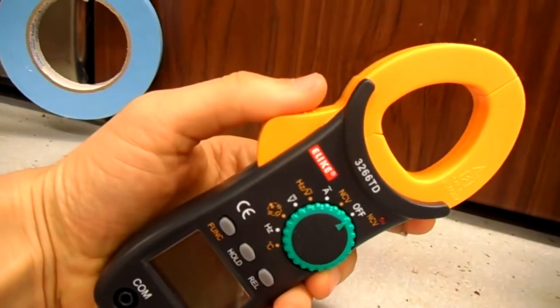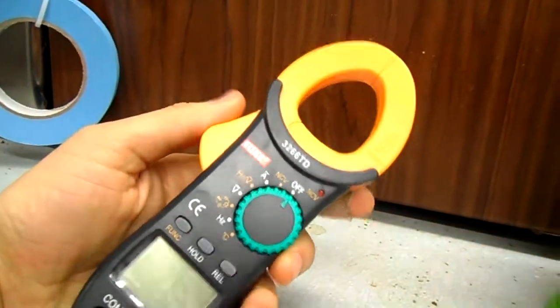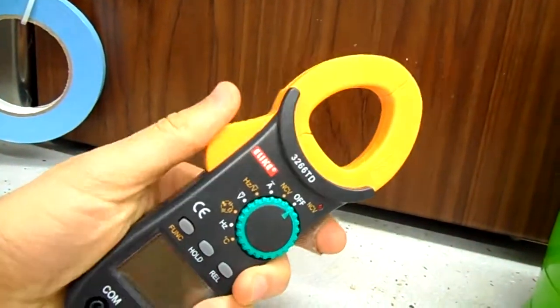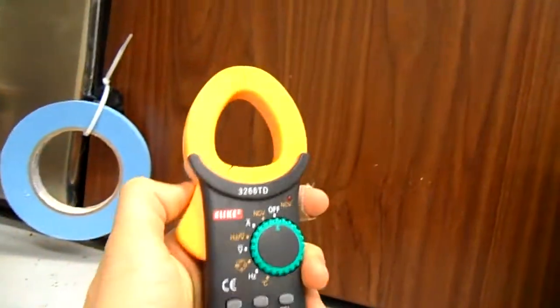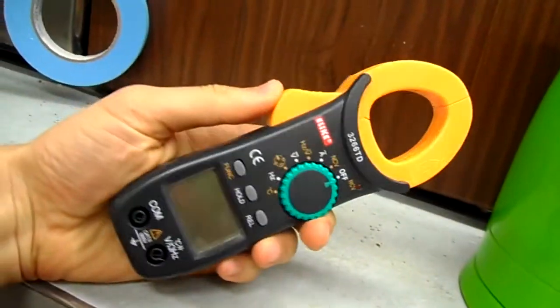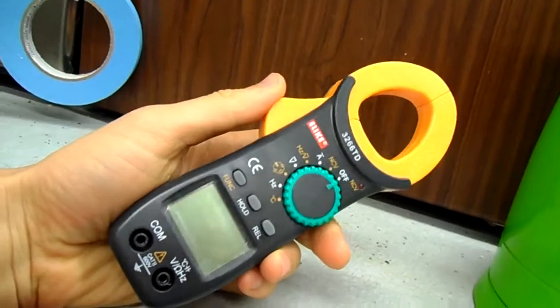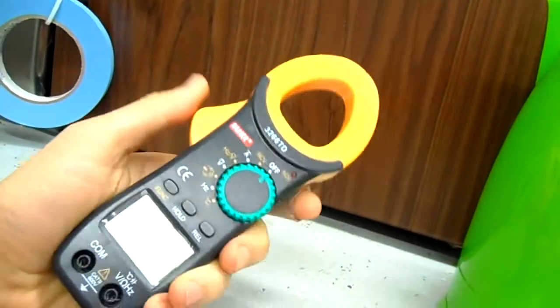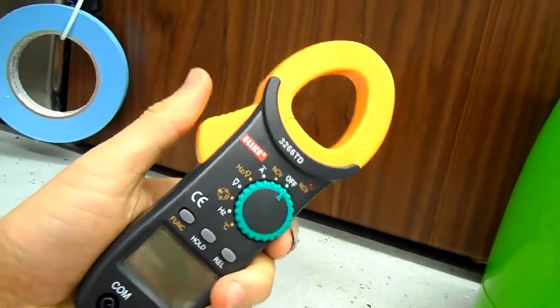In a previous video review of this Elike 3266TD clamp meter, I claimed that the amp clamp functionality on the test unit I was sent to review was not working. Turns out I made a mistake, and I'll show you what the mistake was and how you can avoid it when making current measurements using an amp clamp.